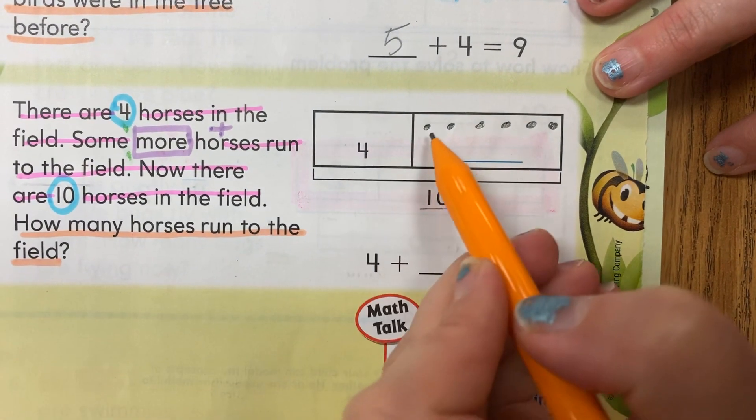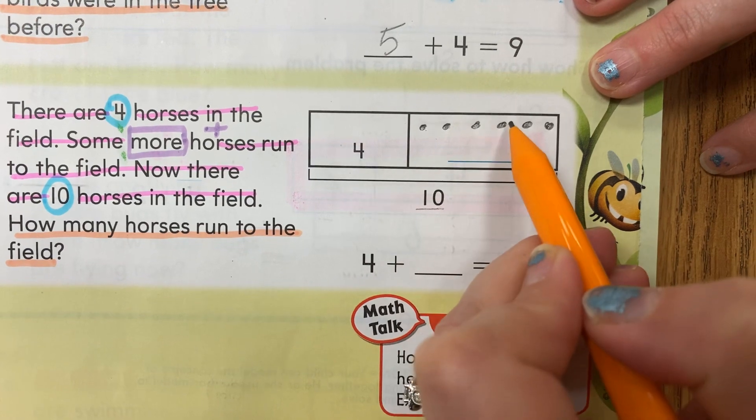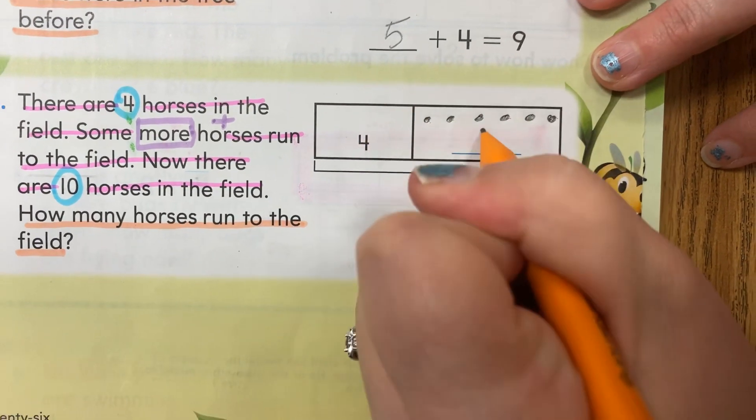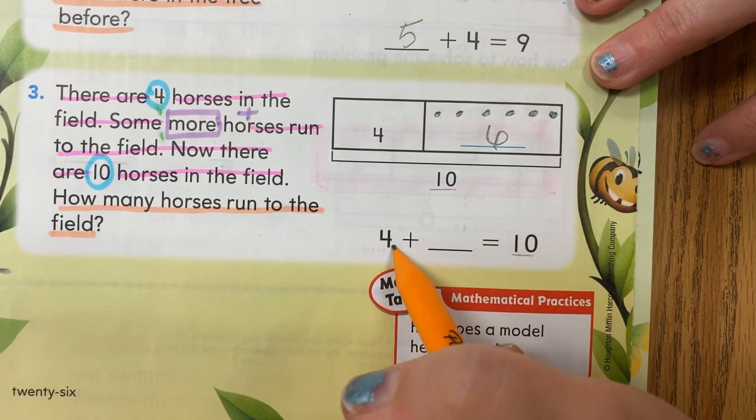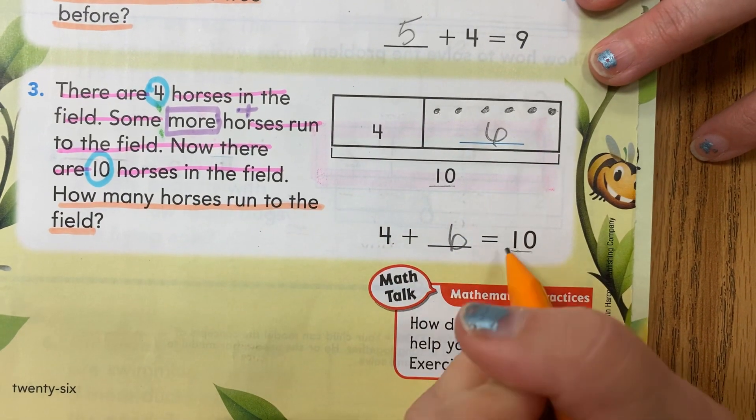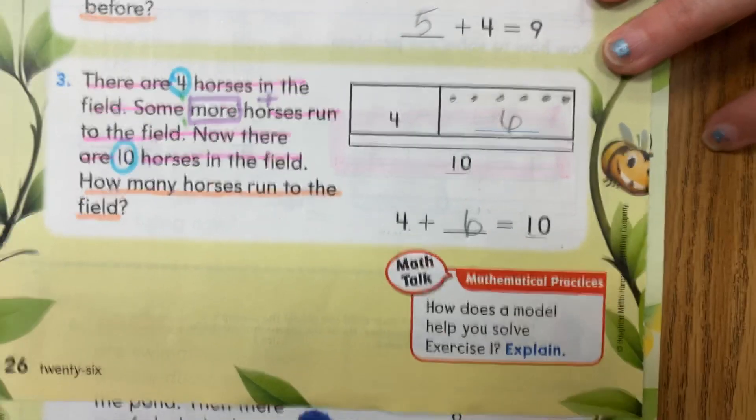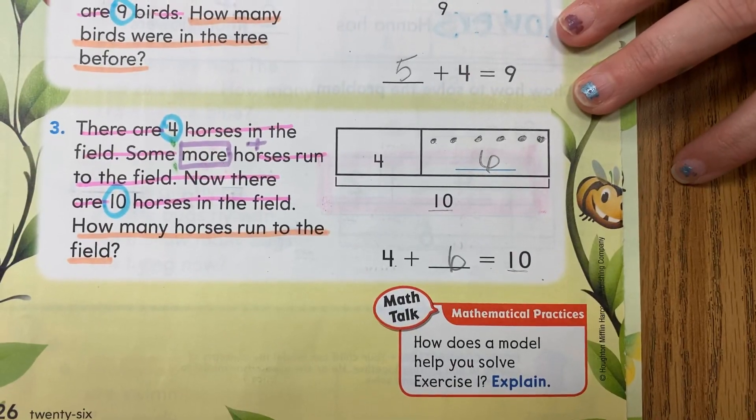I'm going to stop at ten because that's my sum, my total. Now let's count it up: one, two, three, four, five, six—six. So four horses plus six more horses equals ten horses.